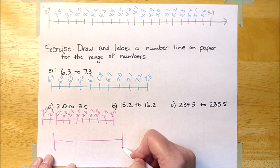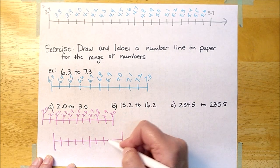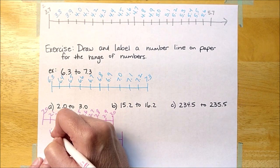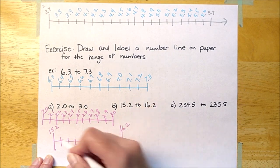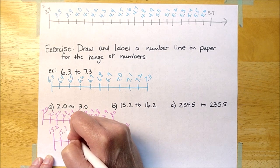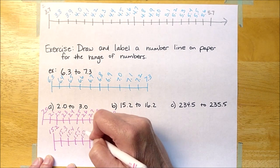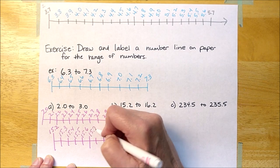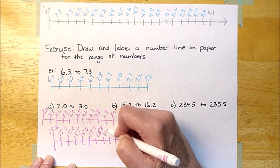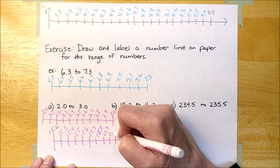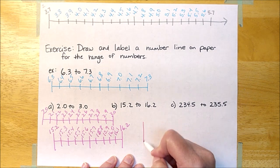Now for B, I have to go from fifteen and two tenths to sixteen and two tenths. So this will be fifteen and three tenths, fifteen and four tenths, fifteen and five tenths, fifteen and six tenths, fifteen and seven tenths, fifteen and eight tenths, fifteen and nine tenths, sixteen and no tenths, sixteen and one tenth. I hope you got those all right.